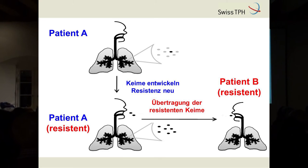Nun, wie kommen diese Bakterien überhaupt an diese Resistenzen? Wie entwickelt sich diese Resistenz? Da gibt es im Prinzip zwei Möglichkeiten. Einerseits passiert dies de novo, quasi neu, während der Behandlung eines Patienten. Das kann damit zu tun haben, dass die Antibiotika vielleicht eine schlechte Qualität haben, dass die Dosis nicht stimmt, dass die Patientin oder der Patient nicht alle Pillen schluckt jeden Tag, wie sie eigentlich müsste während den sechs Monaten. Und dementsprechend können dann diese resistenten Bakterien aufkommen.